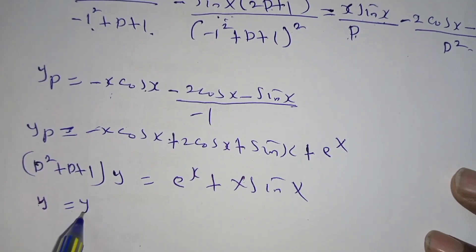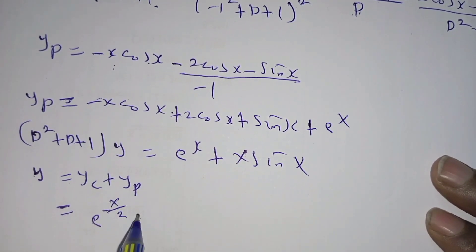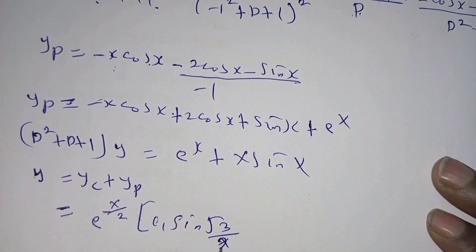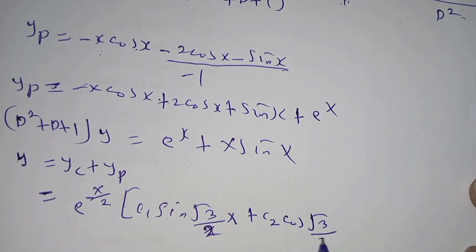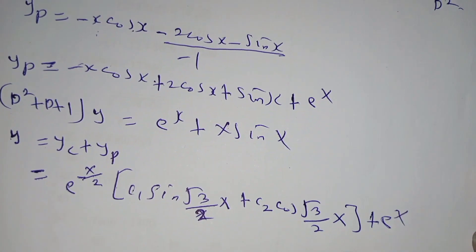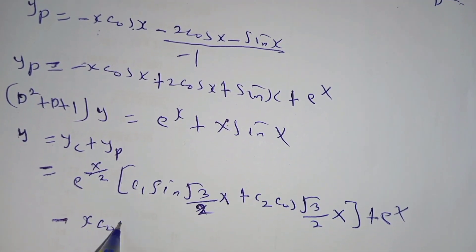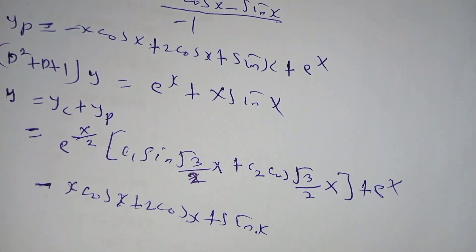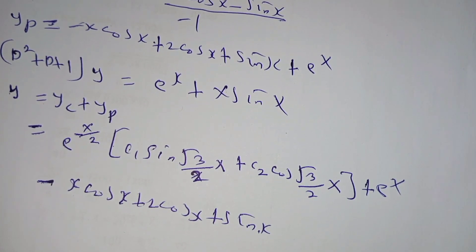The general solution is y = y_complementary + y_particular, which equals e^(−x/2) · [c₁·sin(√3/2 · x) + c₂·cos(√3/2 · x)] + e^x − x·cos(x) + 2·cos(x) + sin(x). That is our complete solution. Thanks for taking your time to study with me — tune in to my YouTube channel so we can continue learning together. Bye bye, see you in the next video.